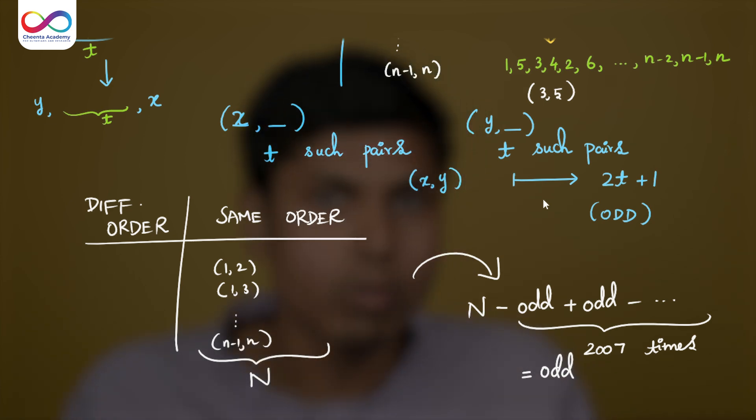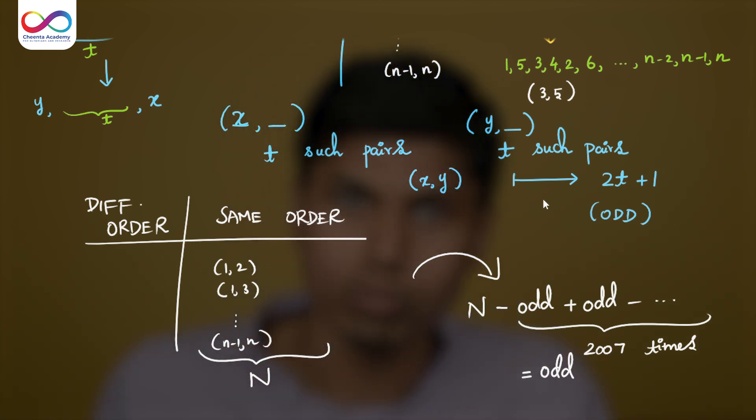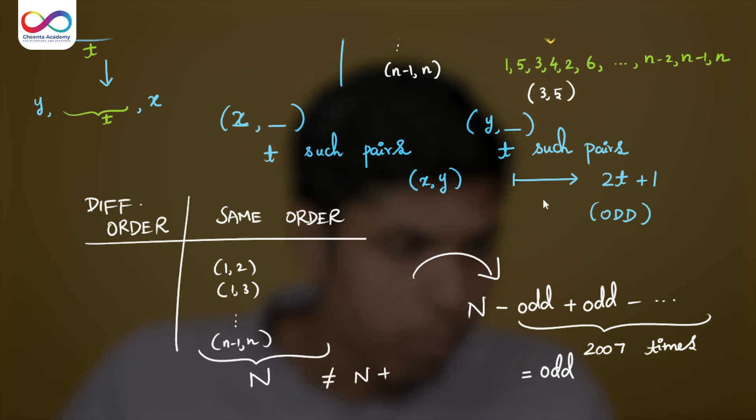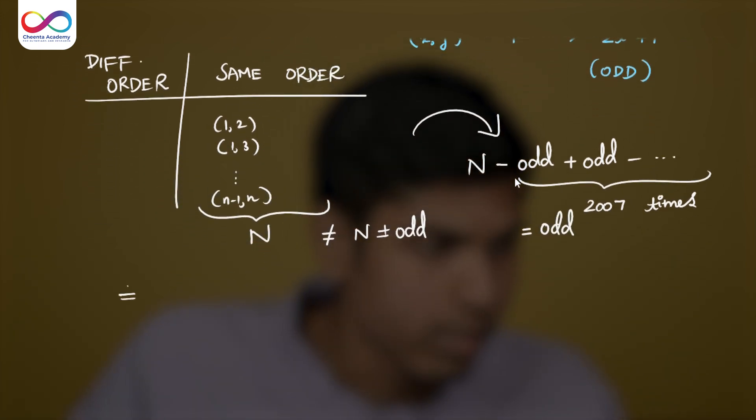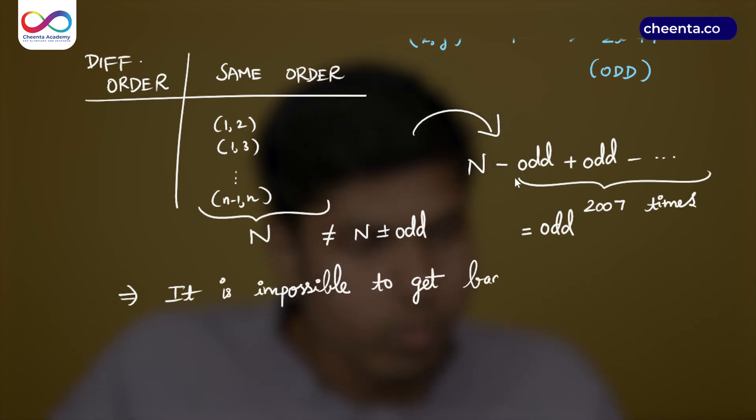Hence, after 2007 moves, it cannot reach the same number n. But we know that the second column should have exactly n elements because it should reach the same configuration as it started with. Hence, original configuration cannot be obtained in odd number of moves. Thus, n cannot be equal to n plus or minus odd implies it is impossible to get back to original configuration.